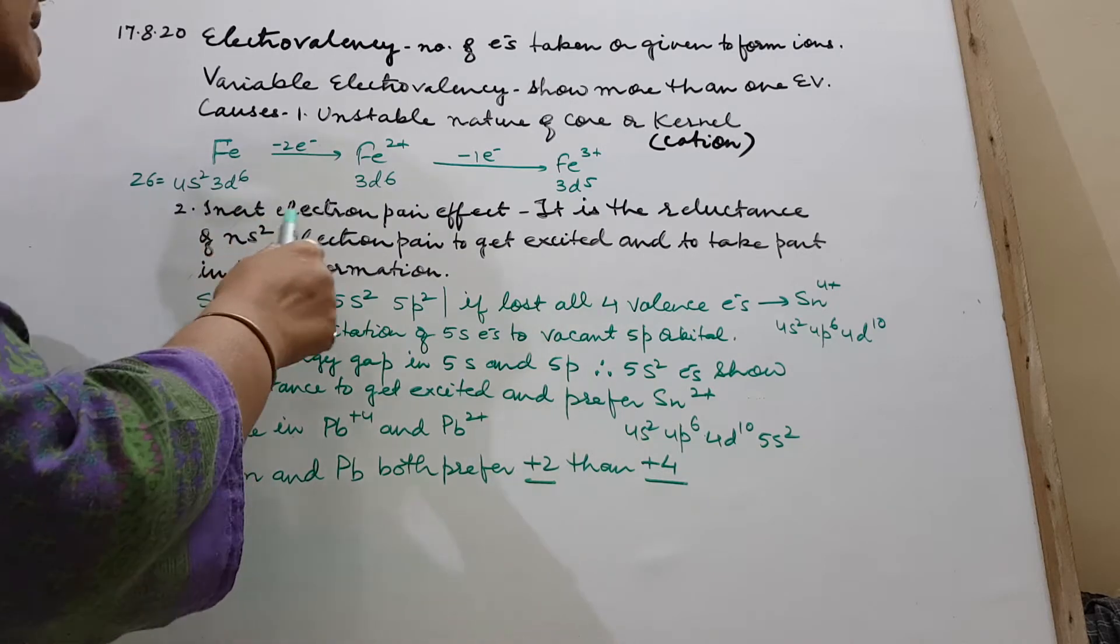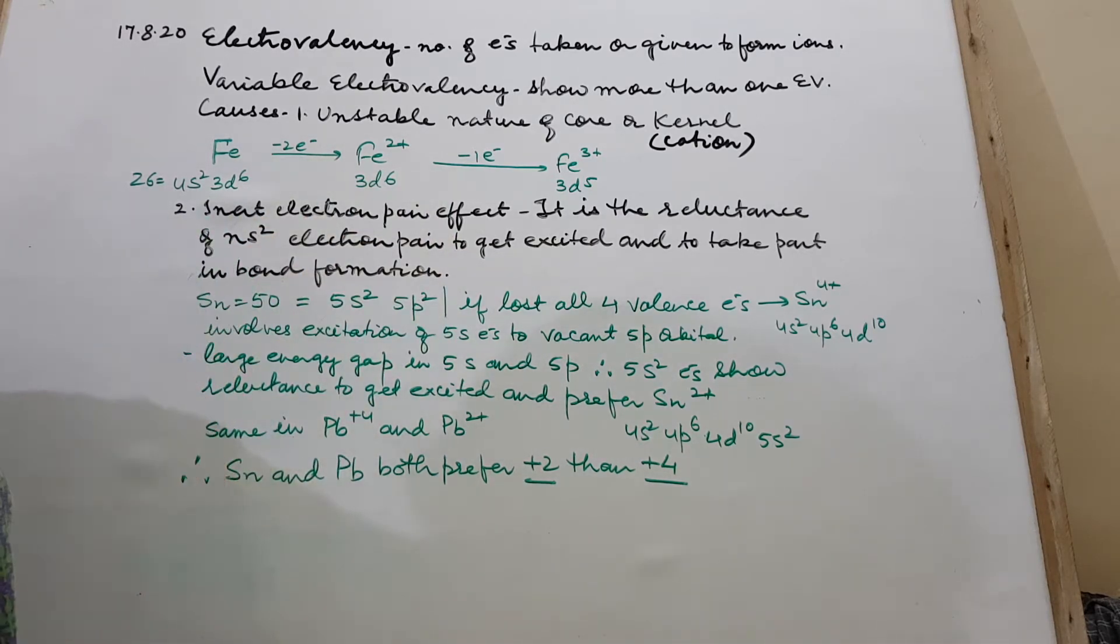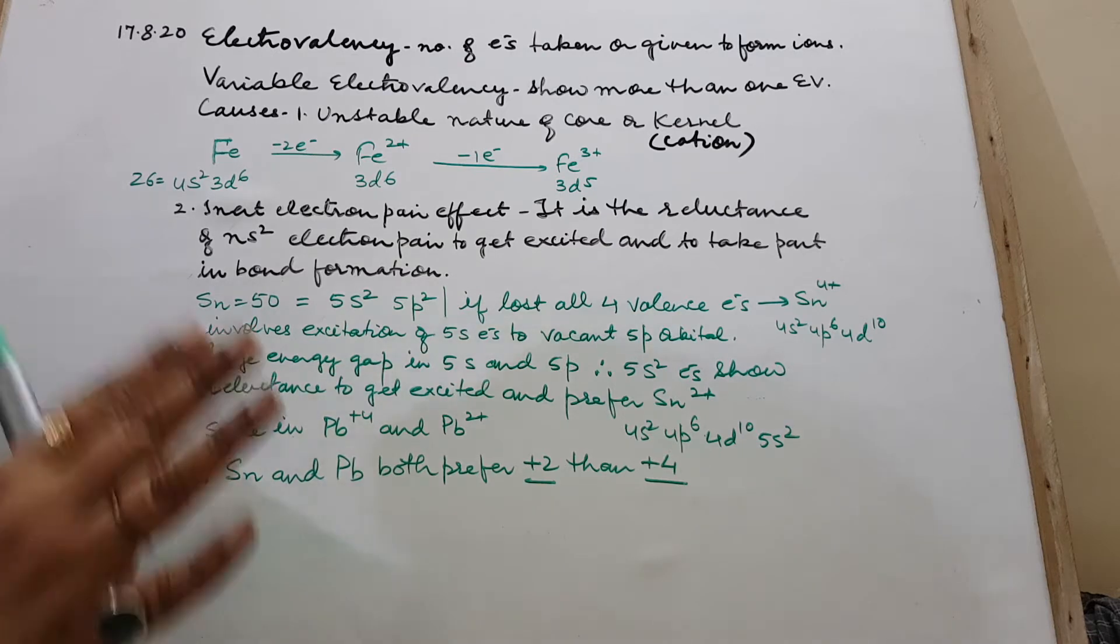Number 2 is inert electron pair effect. What is this? It is the reluctance of ns2 electrons, whichever the outer shell is there, ns2 electron pair to get excited and to take part in bond formation.